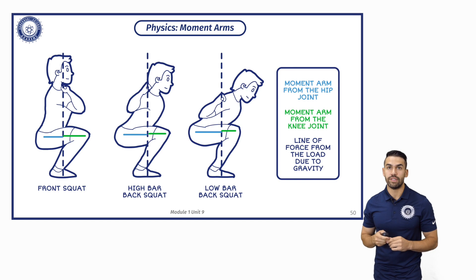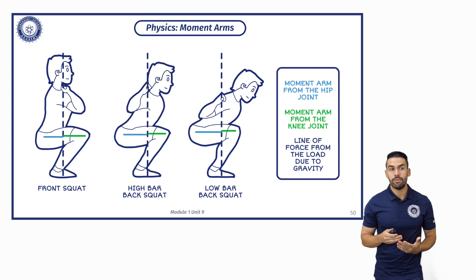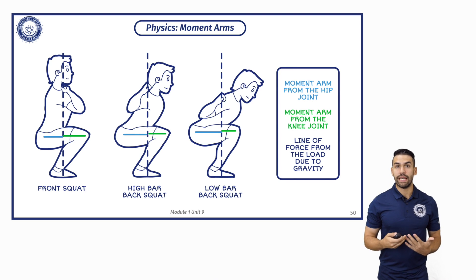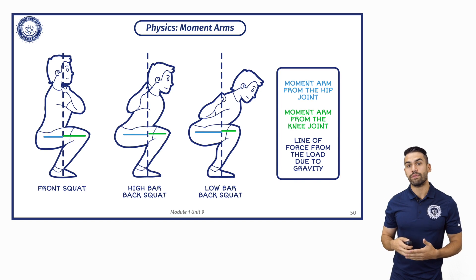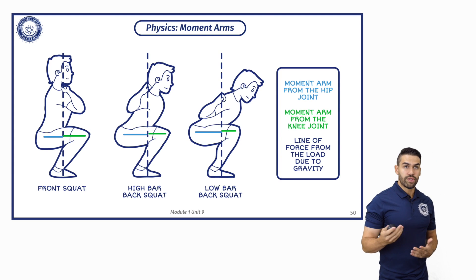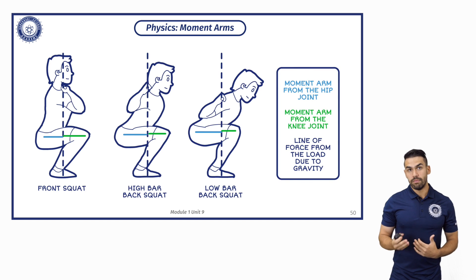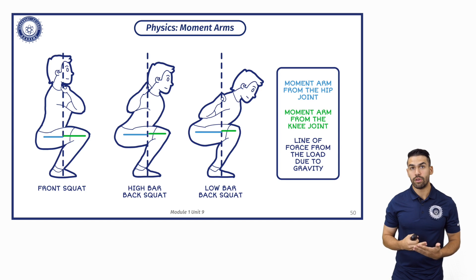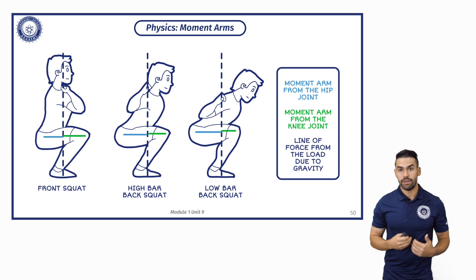Let's take a look at this. We have our front squat, our high bar back squat, and our low bar back squat. These are all going to be slightly different, but they create different forces due to the fact that they also have different moment and lever arms. The light blue section is going to be our moment arm from the hip joint. In the front squat, you can see that it is significantly smaller than the high bar back squat and the low bar squat in that order because the bar is placed in a different location.